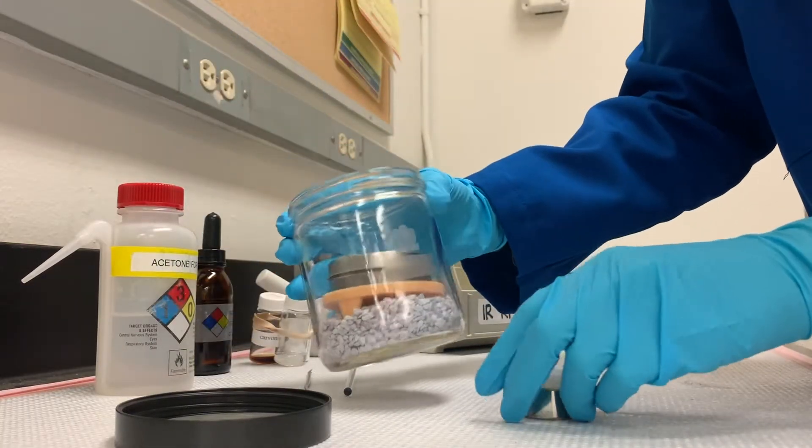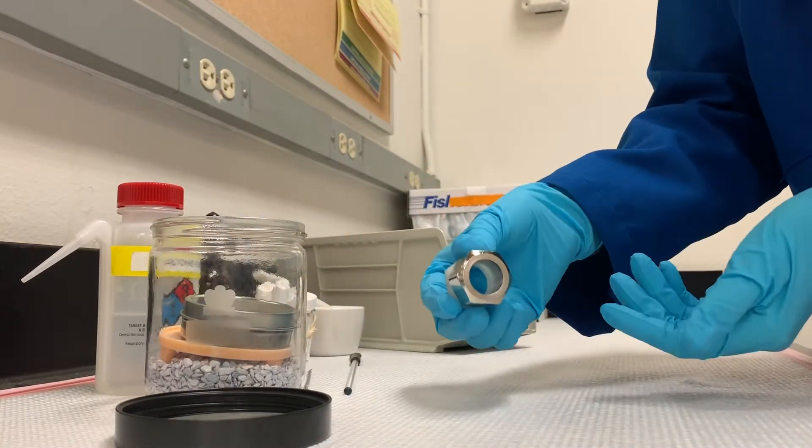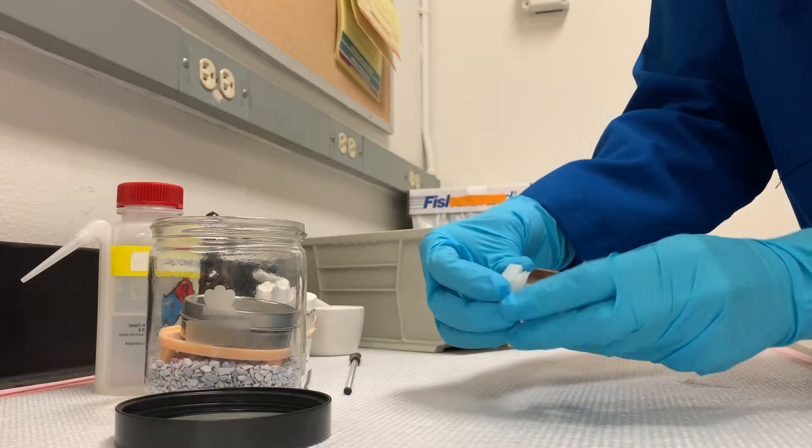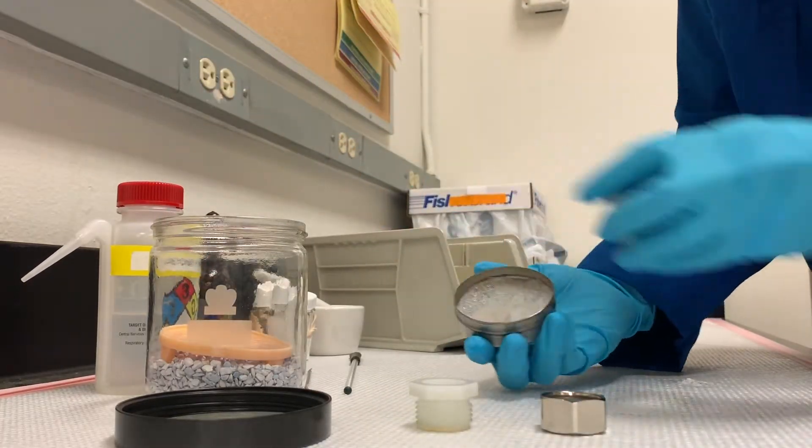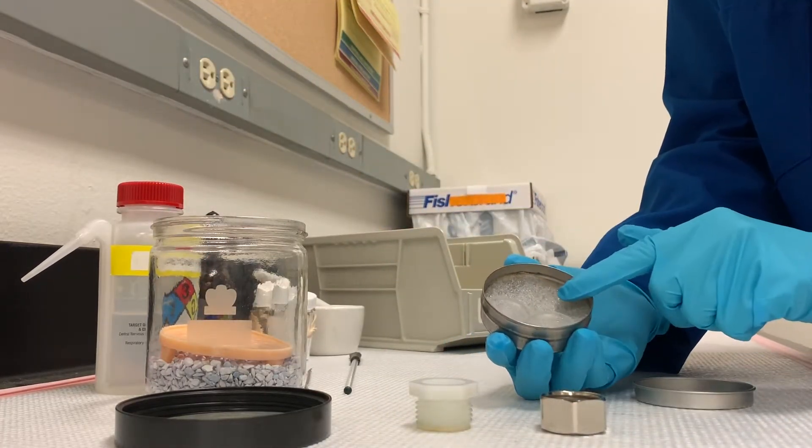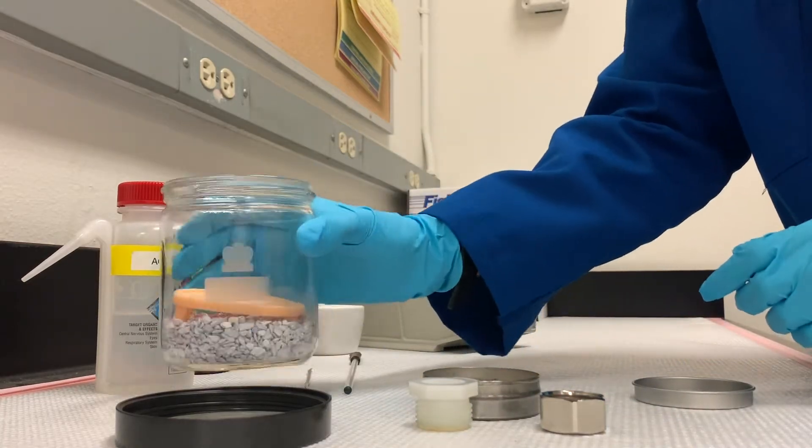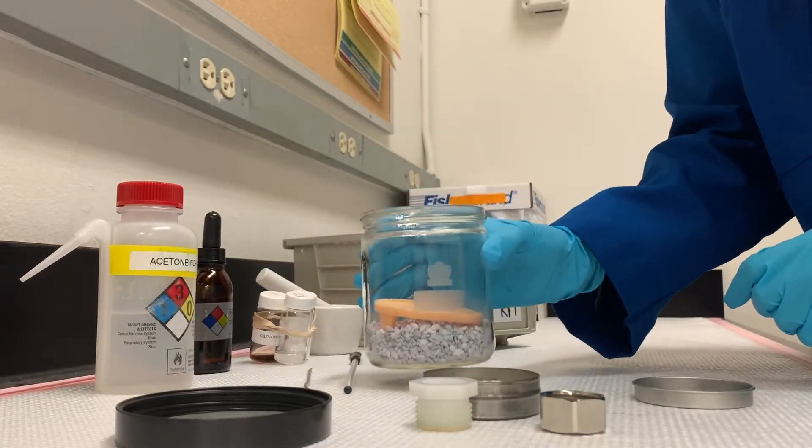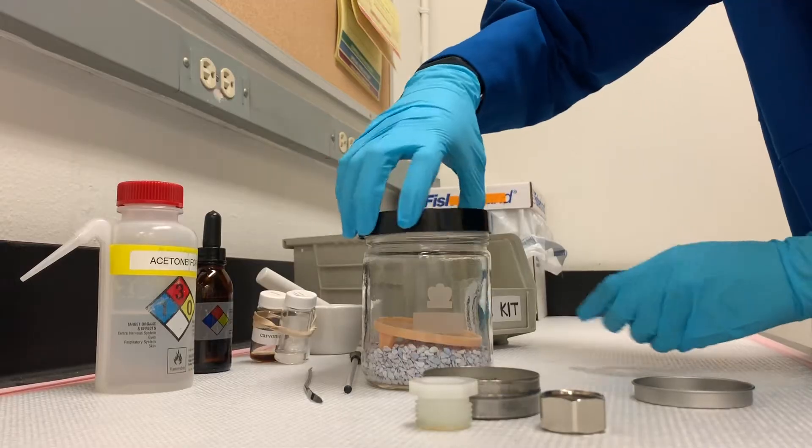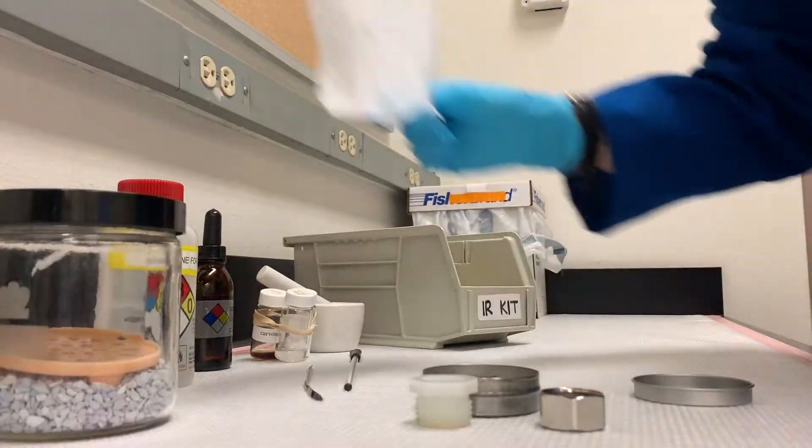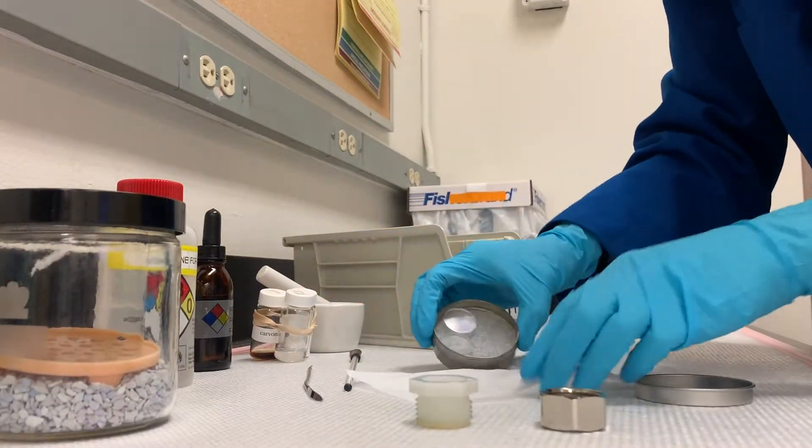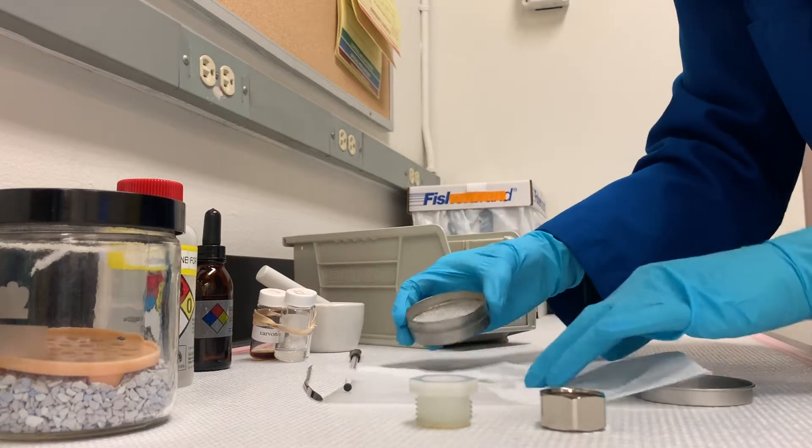This is our desiccator, it keeps our salt plates dry. We have a sample holder here in two parts. We have in here our very delicate, very expensive salt plates, sodium chloride, and this desiccant has to stay dry, so we keep this closed at all times. Rather than placing on bench paper, we're always going to place on kim wipes.